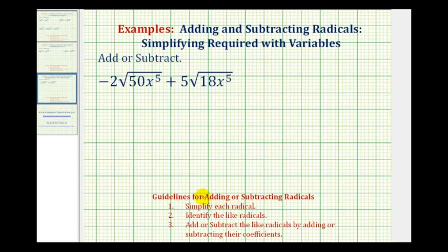The first step for adding or subtracting radicals is to simplify the radicals. Then, once they're simplified, we can identify the like radicals and add or subtract them by adding or subtracting the coefficients.